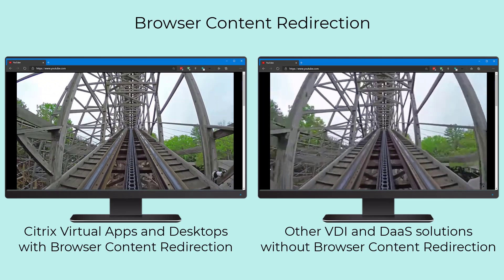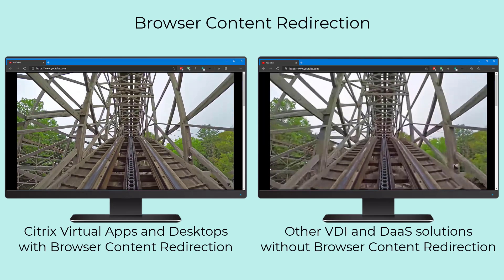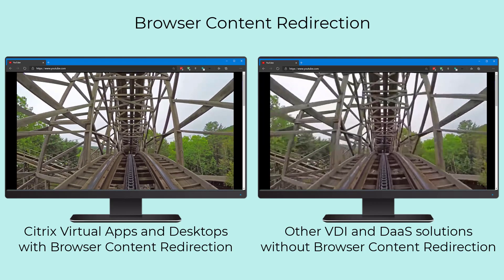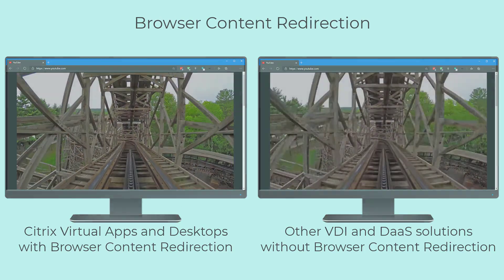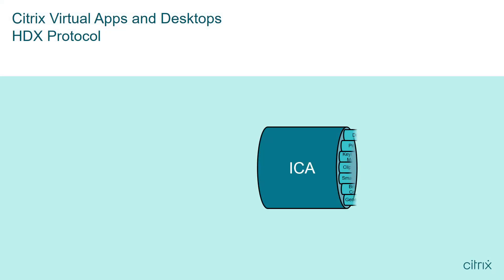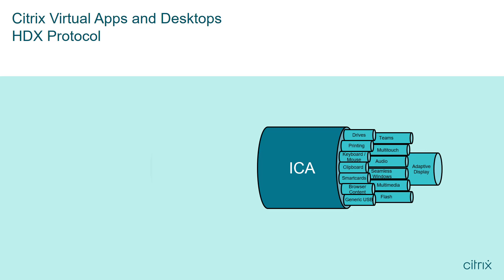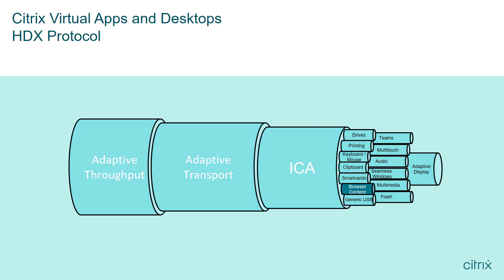To make the web browsing experience even better, we can further optimize the experience by changing how we fetch and render web content. Citrix Virtual Apps and Desktops utilizes HDX, which incorporates multiple technologies ranging from optimized virtual channels within the ICA protocol to adaptive transport and adaptive throughput algorithms. The browser content redirection virtual channel optimizes the traffic patterns for web-based traffic.